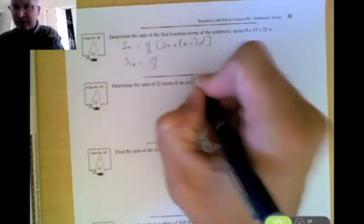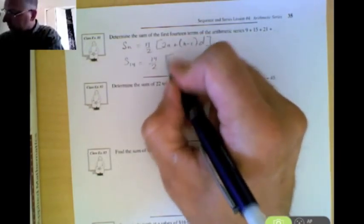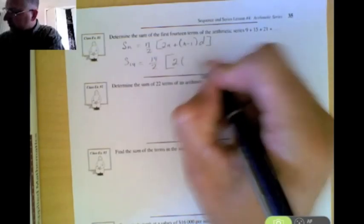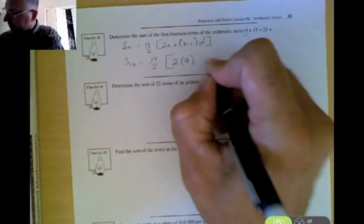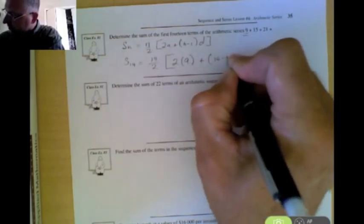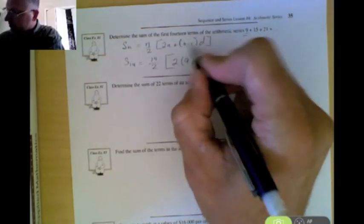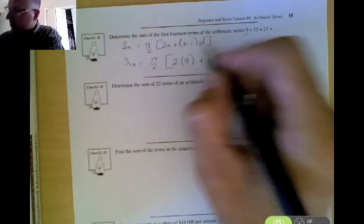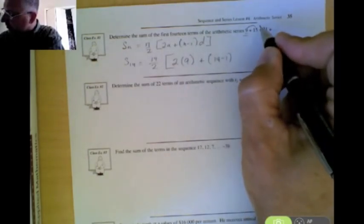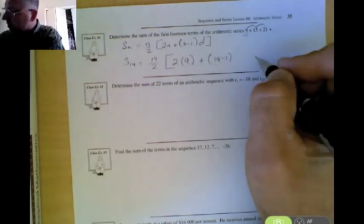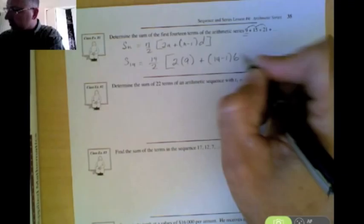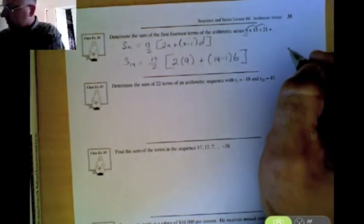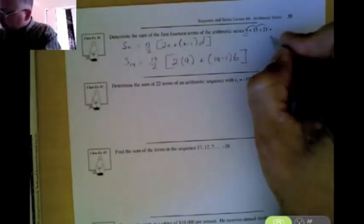That means n is 14. That's the number of terms that we have. a is our first term. Well, our first term in this particular series is 9 plus 14 minus 1 because n is 14 in this question. And our common difference, how did we get from 9 to 15, from 15 to 21? Well, in this case, we're adding 6 each time, so our common difference is 6.